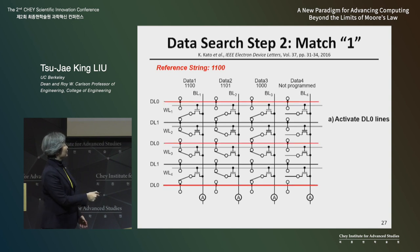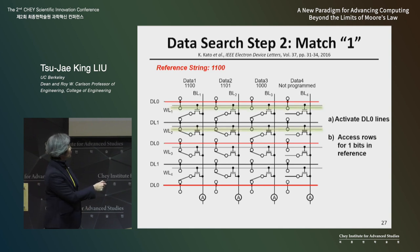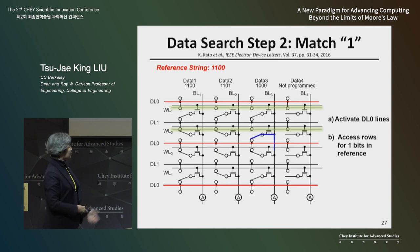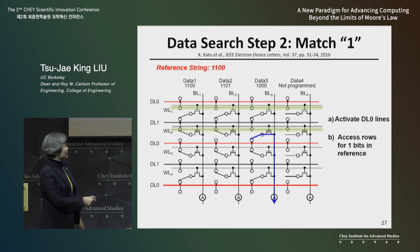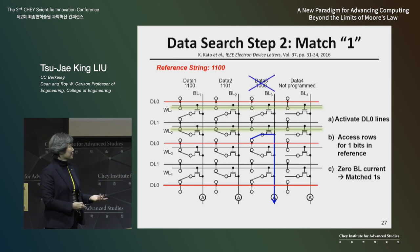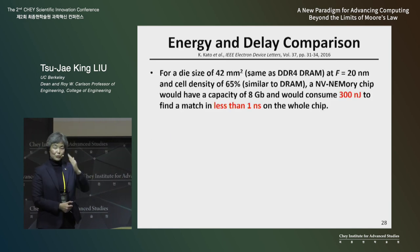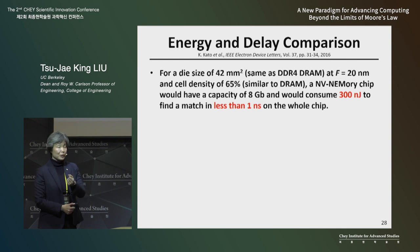Here, we apply voltage to data line zero lines, then look at the two rows that are supposed to have ones, turn on those rows, and see which columns conduct current. If it conducts current, that means it's storing a zero, not a one, so we can eliminate those columns. In just two steps, we can determine which column is storing the string you are interested in.